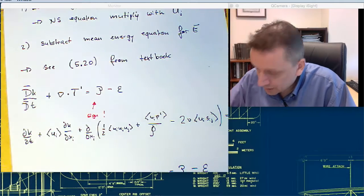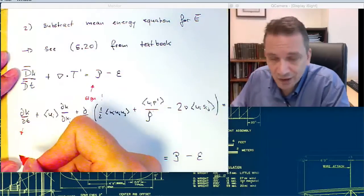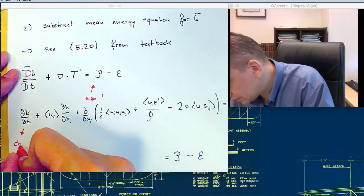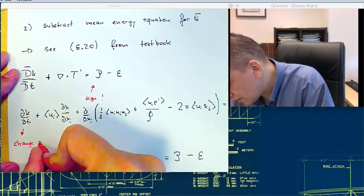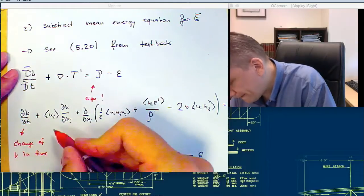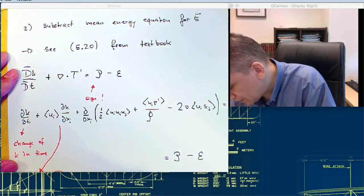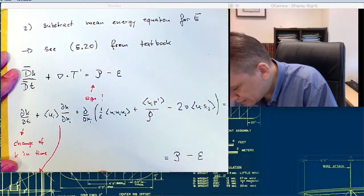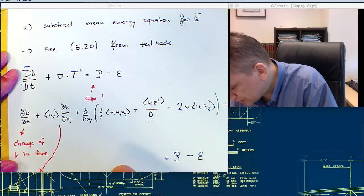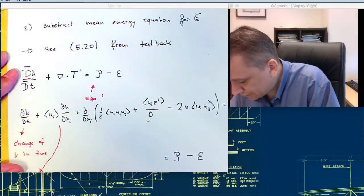So again, we can have a look at each of these terms. So this is a change of turbulent kinetic energy in time. This one, again, is the convective transport of the turbulent kinetic energy due to the mean flow field.